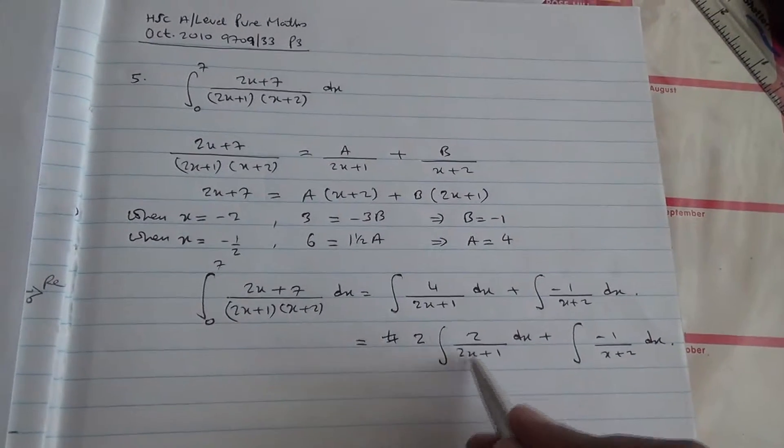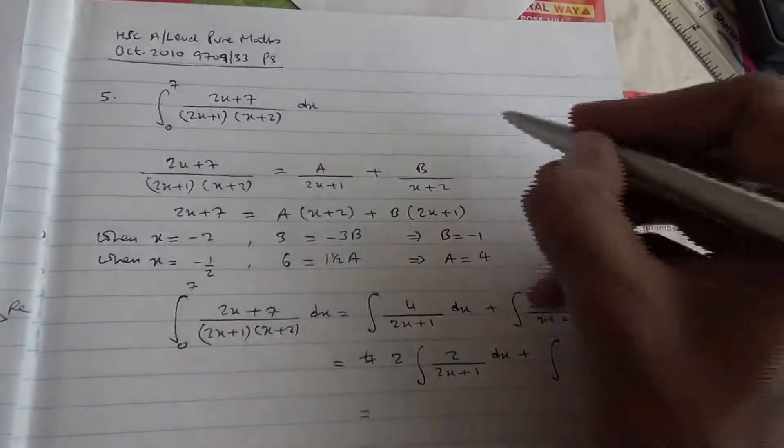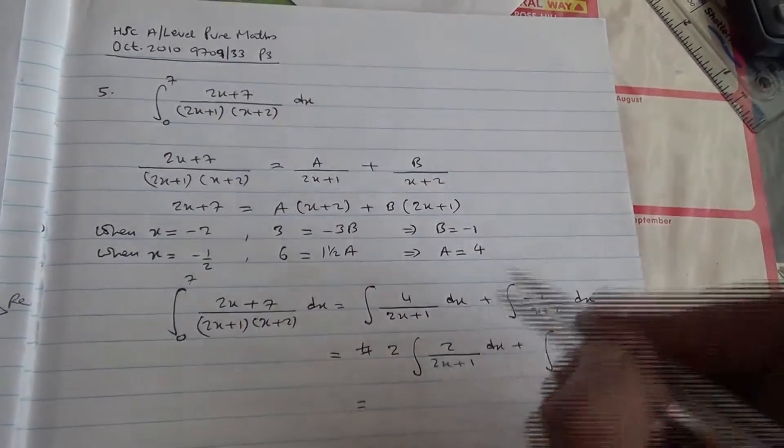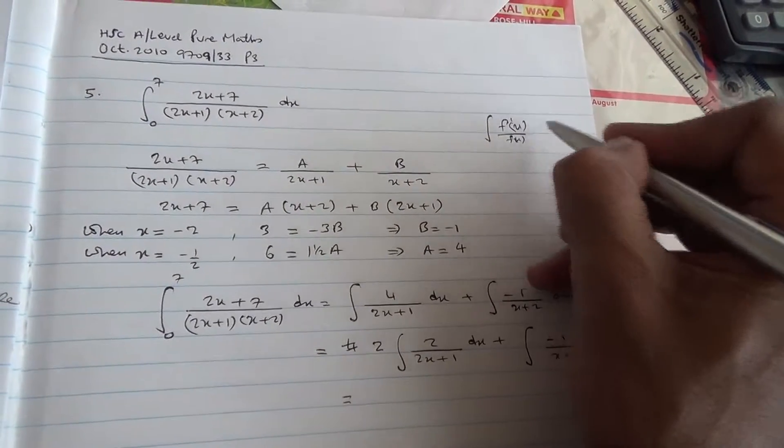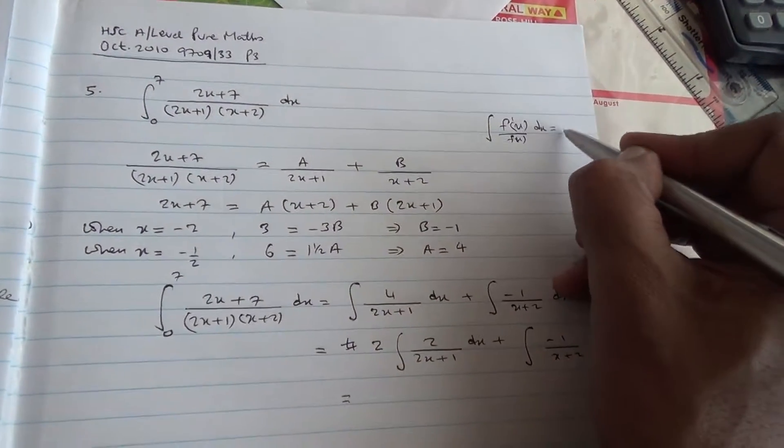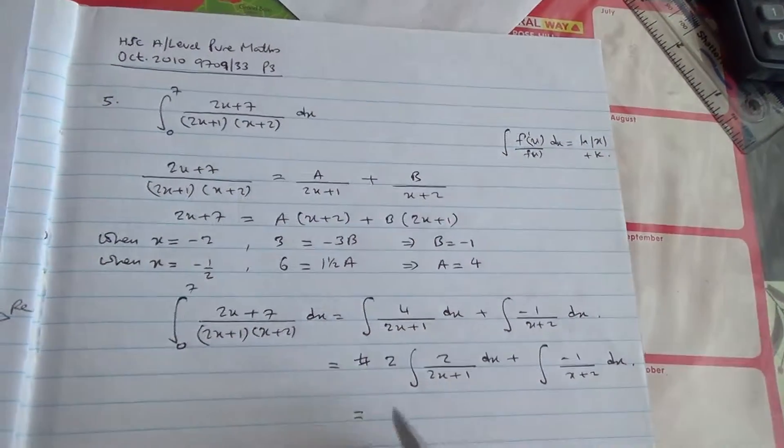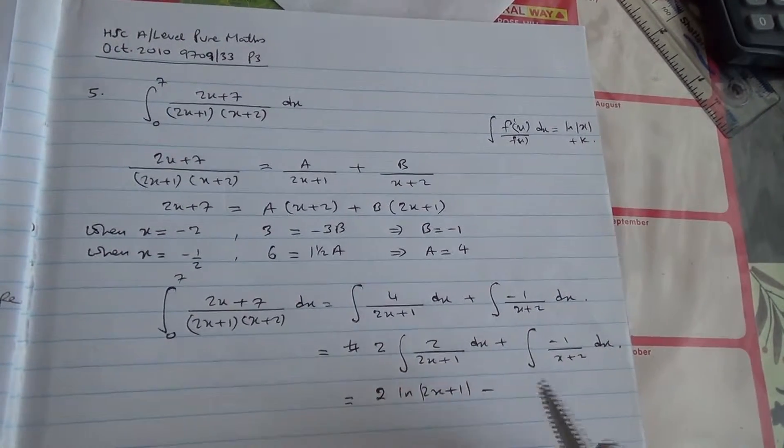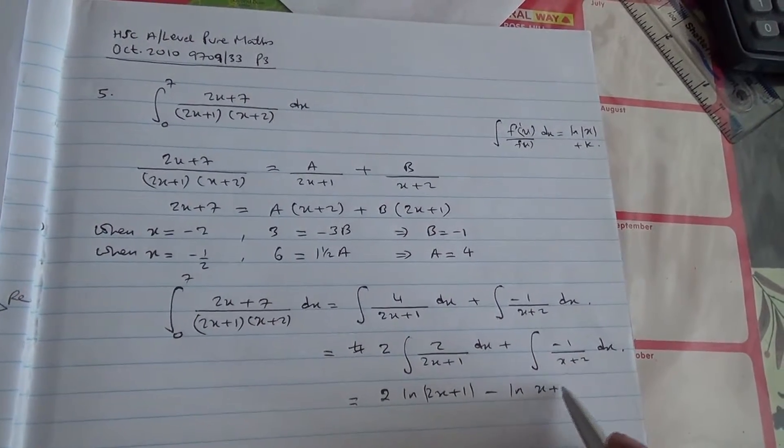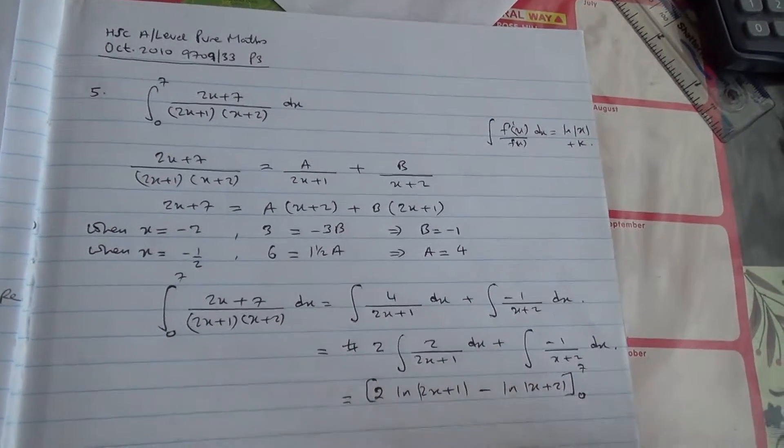If you differentiate, this is going to get 2, so I'm going to be saying that this is of the form of the integral of f dash x over fx dx is equal to ln mod of x plus k. So you have 2, then I got ln 2x plus 1, the mod of that, plus minus becomes minus, ln x plus 2, and the mod of it, so then you're going to put your limits 7, 0.